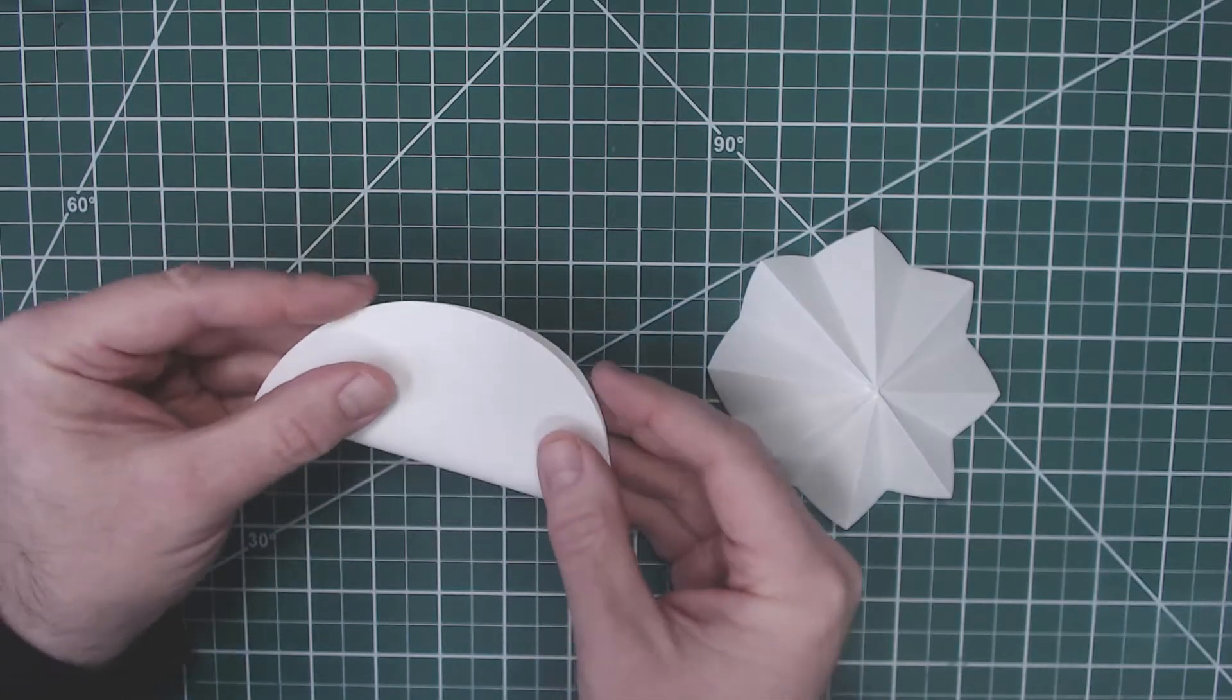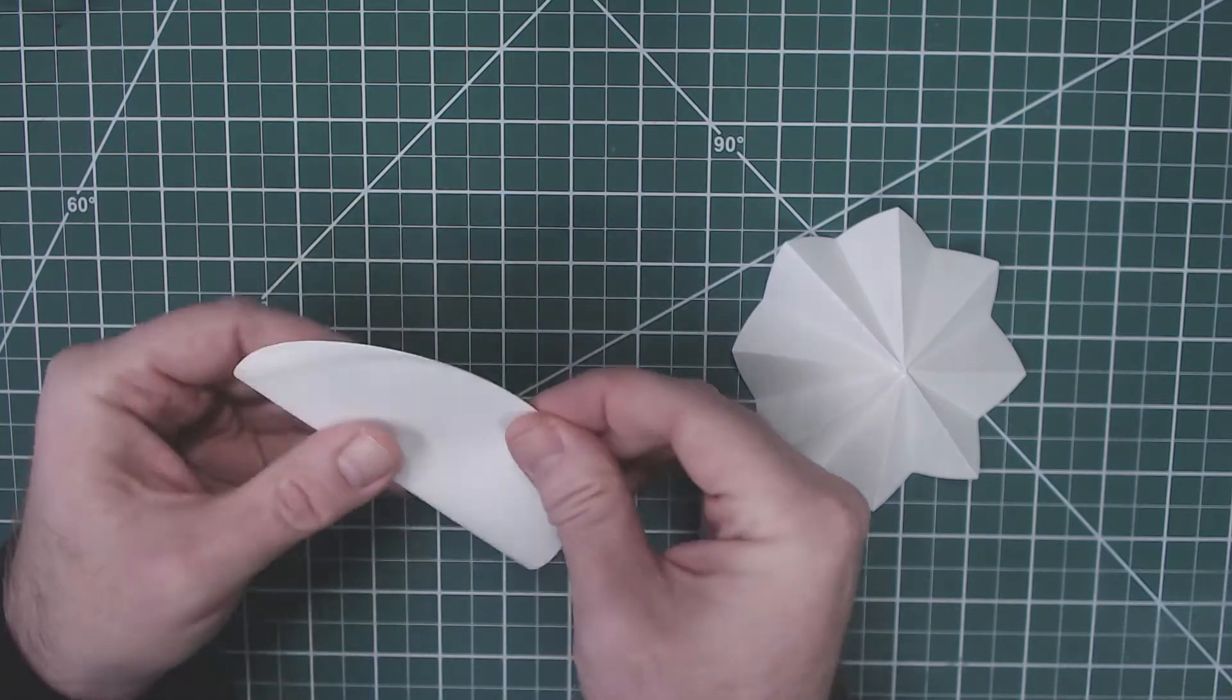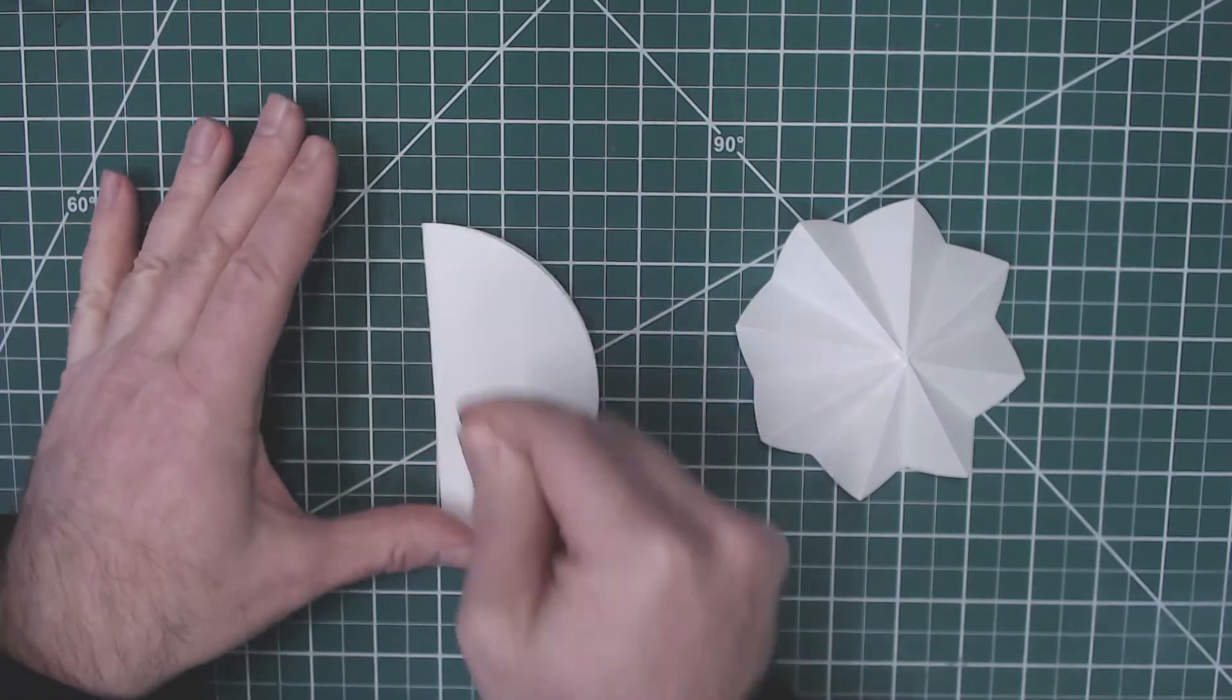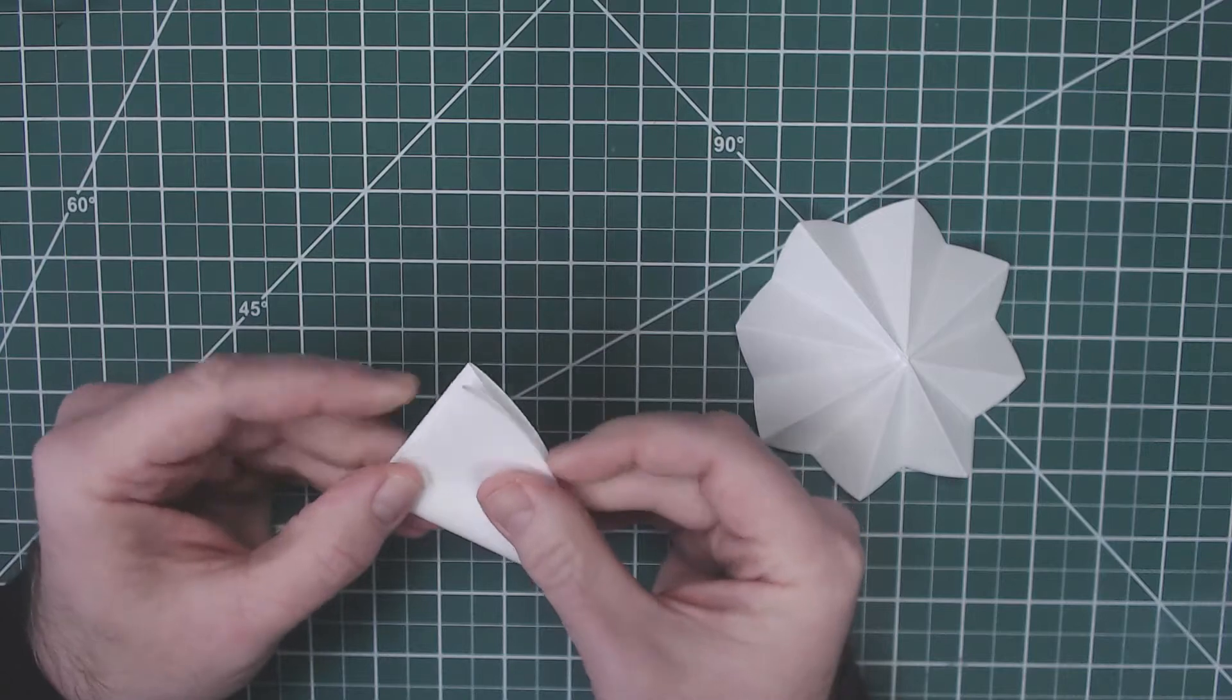First step is to take your piece of filter paper and fold it in half and just put a little crease down it. Then we're going to take that piece of filter paper and fold it in half again.